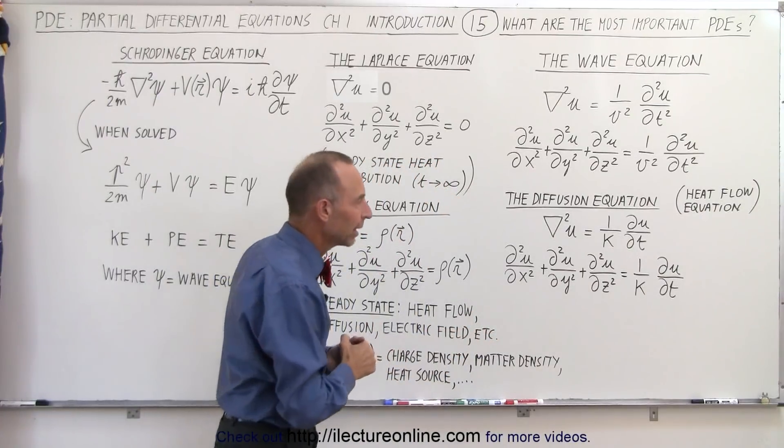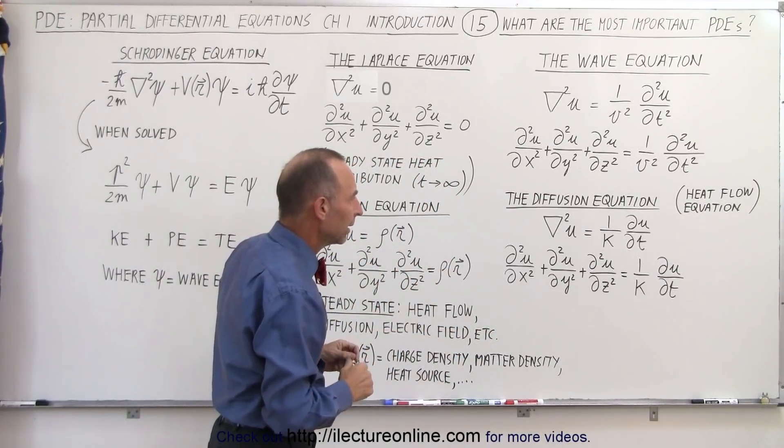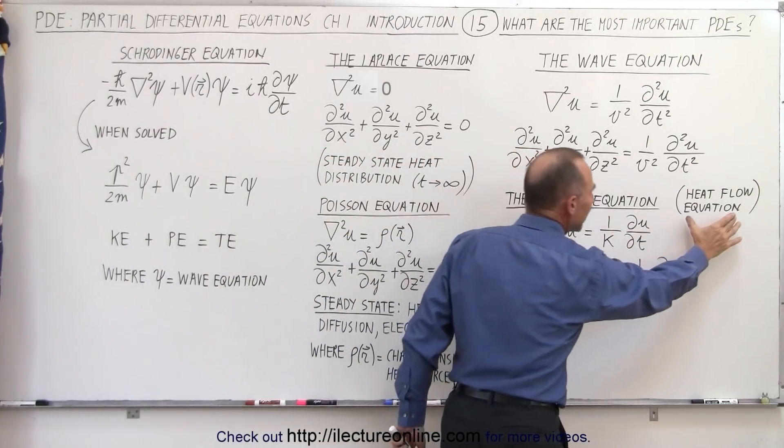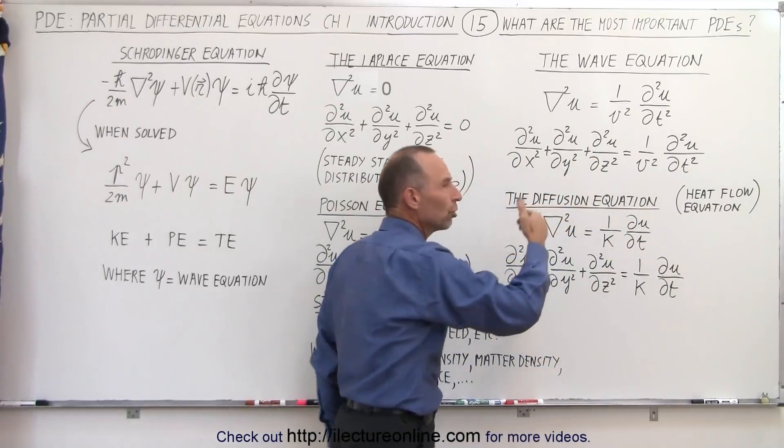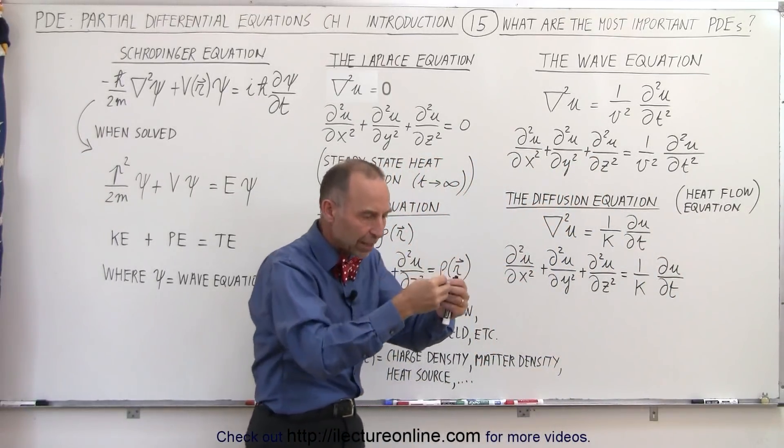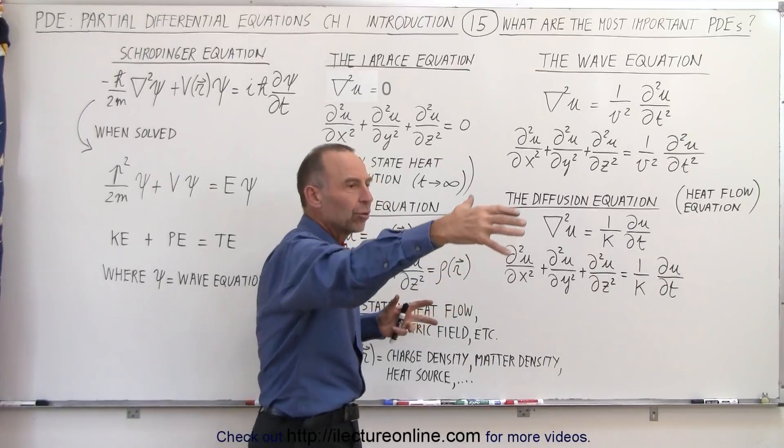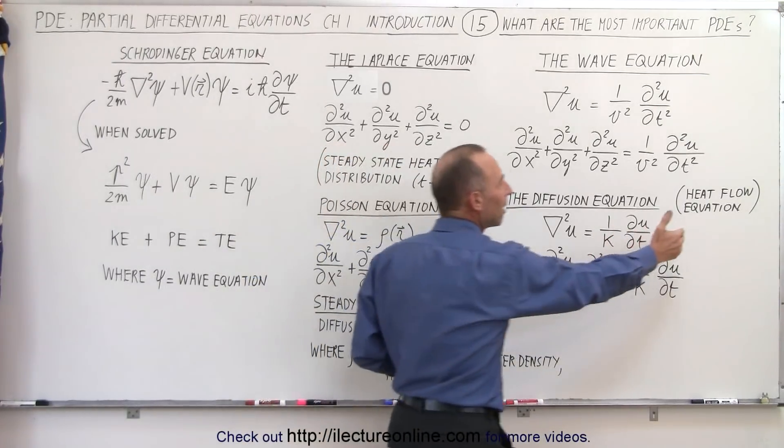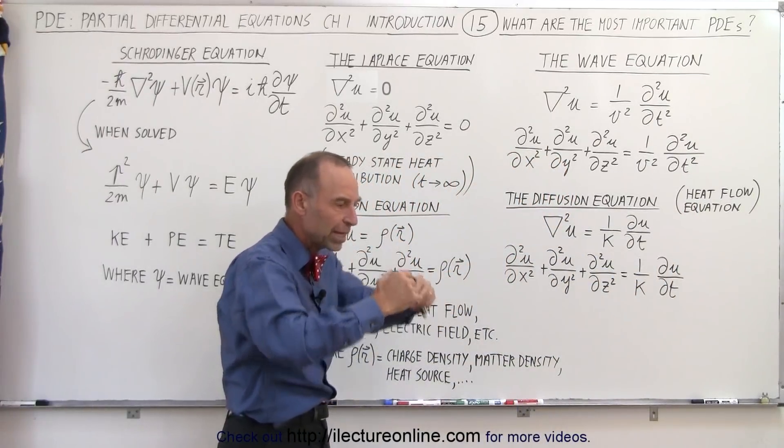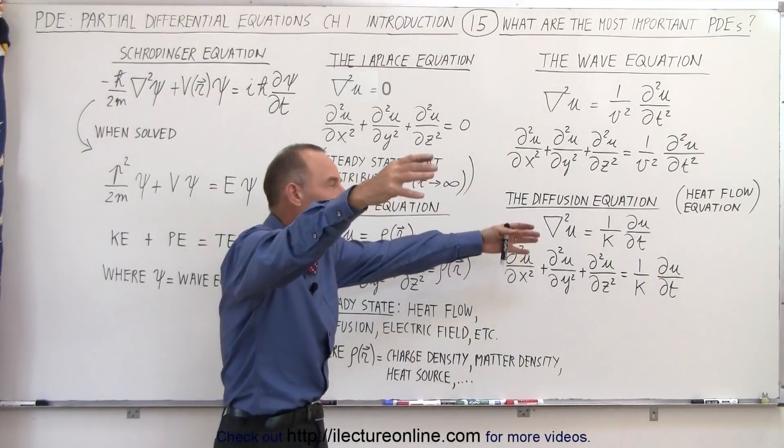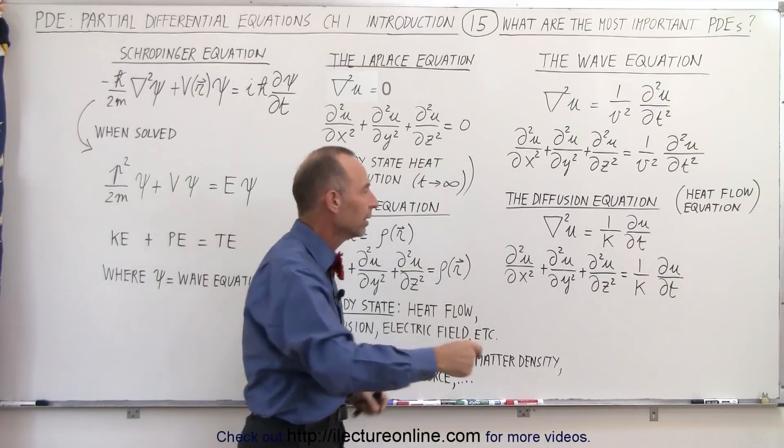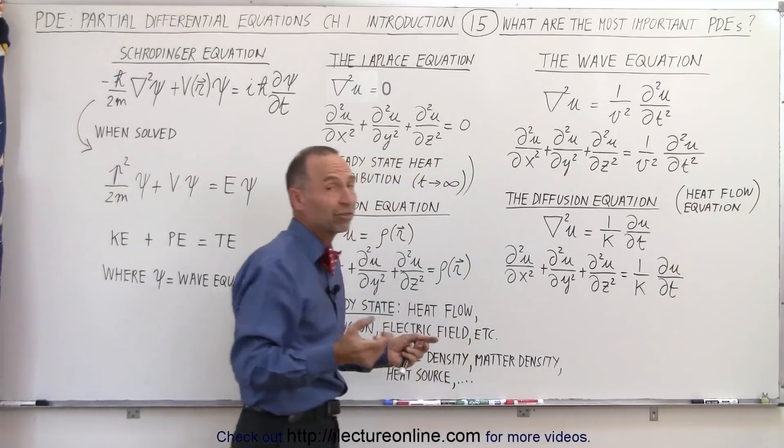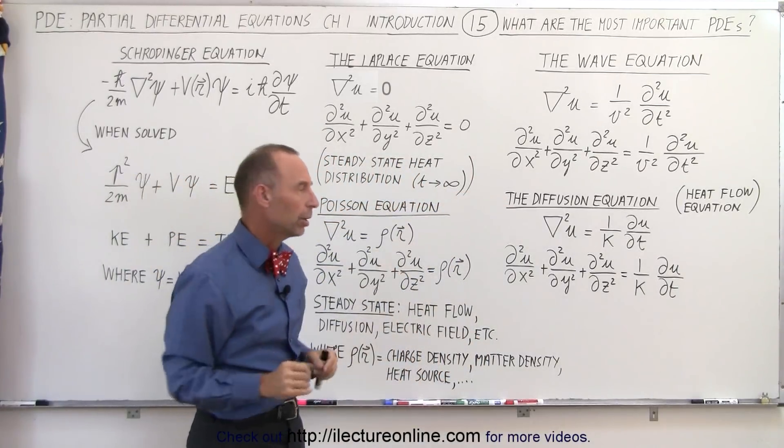It can also be called the heat flow equation. So the diffusion equation refers to having a chemical in a solvent, and the chemical spreads throughout the solvent. We use the diffusion equation for that. Or we can have heat flow - we have a source of heat, it infuses some heat, and now we watch that heat distribute itself throughout the room or throughout the area. Again, it could be over volume, it could be over an area, or just over a line, for example, the heat flow along a long bar.